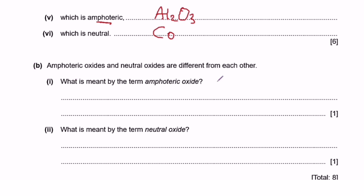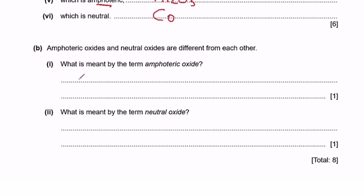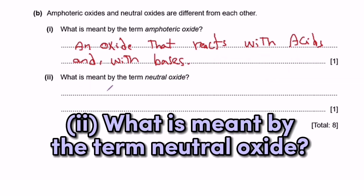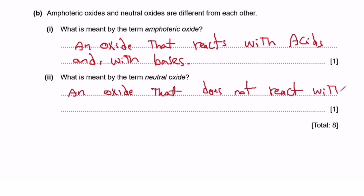Part b asks for formal definitions. An amphoteric oxide is an oxide that reacts with acids and with bases. A neutral oxide is an oxide that does not react with acids or bases.